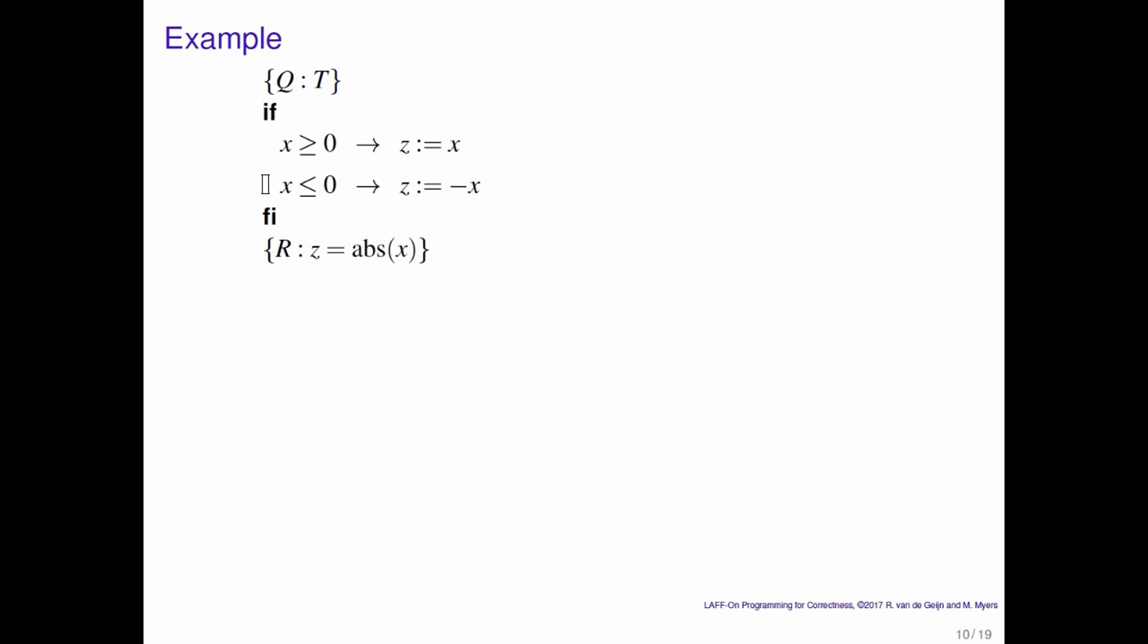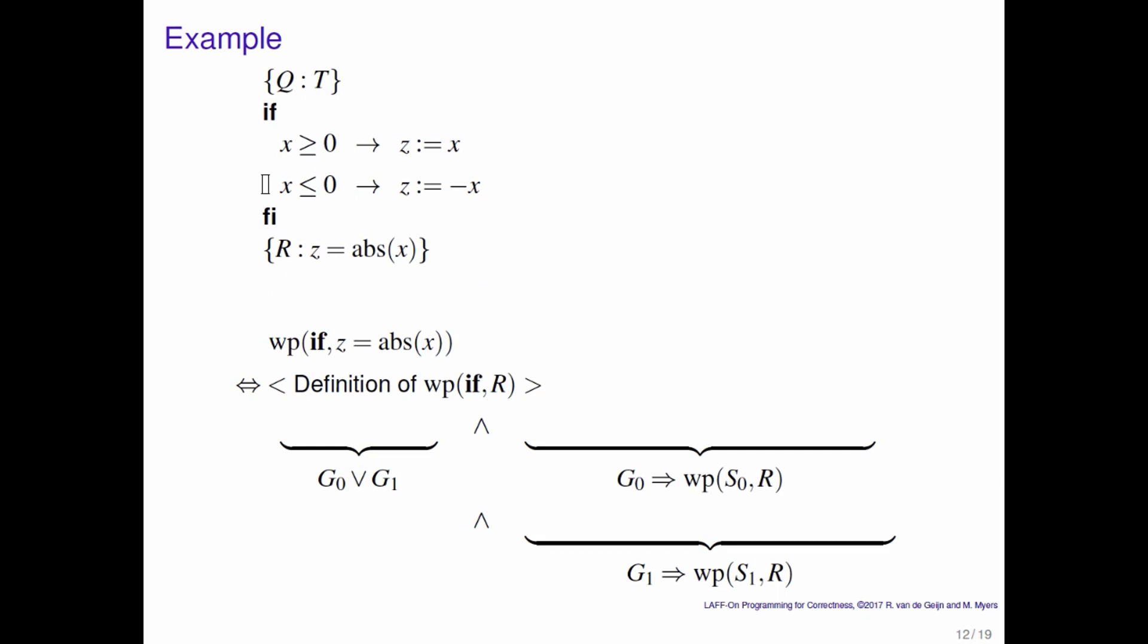So here's the code segment again. We now look at the weakest precondition. We outline what it equals. We only have two guards, so we only have g0 or g1. And then if g0 holds, then that has to imply the weakest precondition of s0r. And if g1 holds, then it has to imply the weakest precondition of s1r.